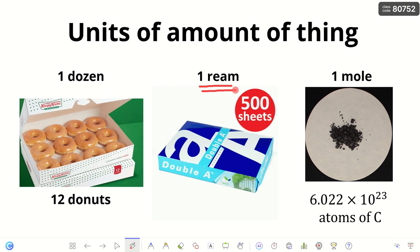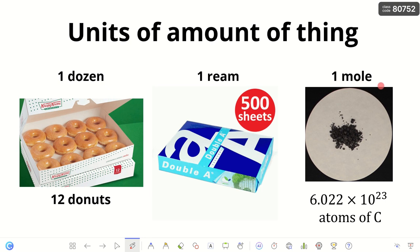Another unit some of you may be familiar with is one ream, which is used a lot for sheets of paper. One ream is equivalent to 500 sheets of paper. Now back to the chemistry concept: one mole of things — how many things is equivalent to one mole? The answer is 6.022 times 10²³ things. It looks quite complicated, but every chemistry student has to know this number.